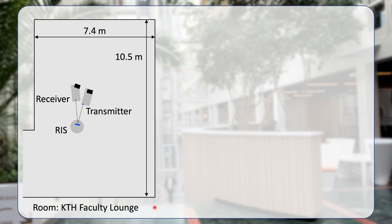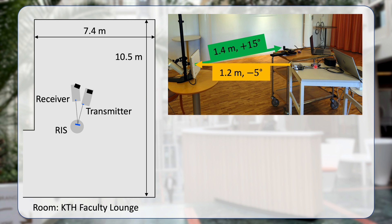The experiments were done in the KTH faculty lounge in Stockholm, which is a room that is roughly 11 by 7 meters. On purpose, we placed the transmitter, RIS and receiver in the middle of the room to avoid strong wall reflections. Here is a picture of the setup where you can see the transmitter and the receiver at their respective angles, and they are also connected to computers for control.